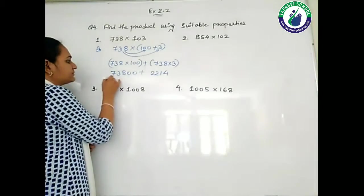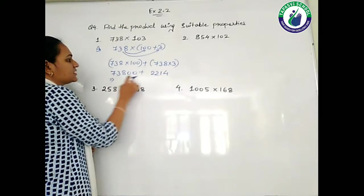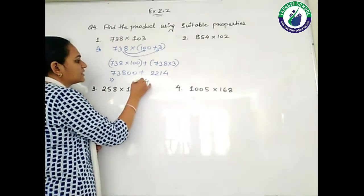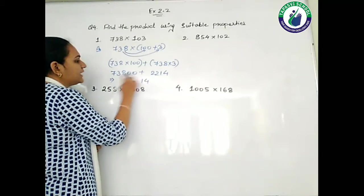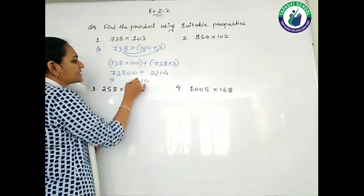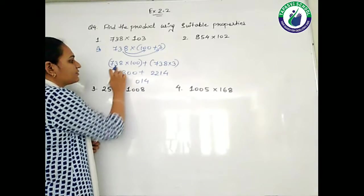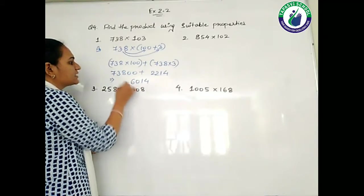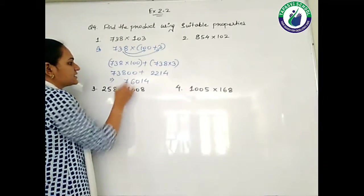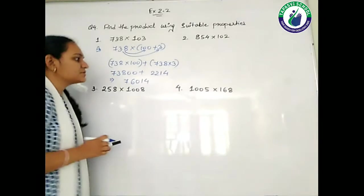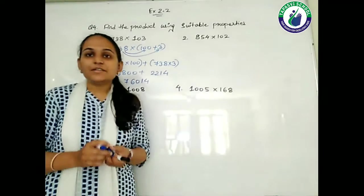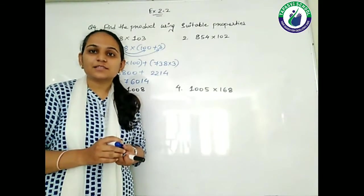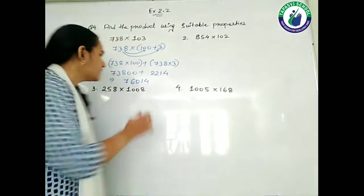Now just add them. So 4, then 1, then 8 plus 2 is 10, 1 plus 3 is 4, plus 2 is 6. The answer is 76,014. Students, 76,014 is your answer.